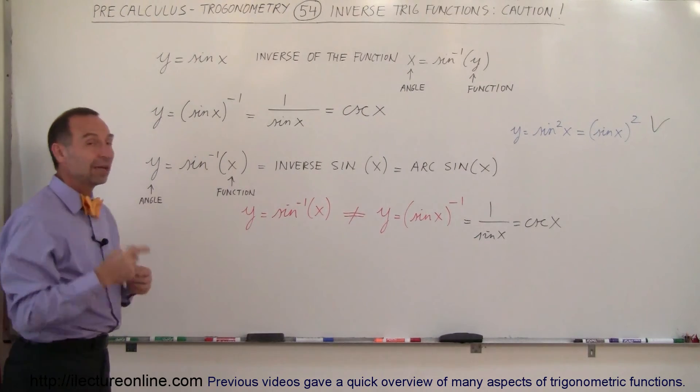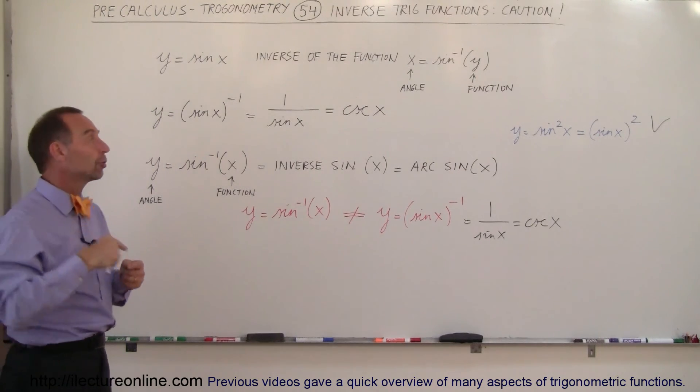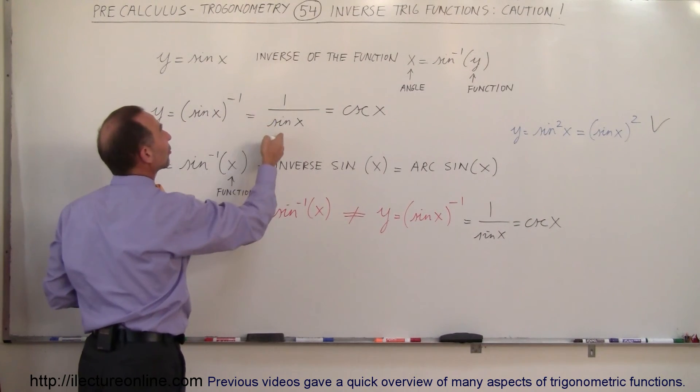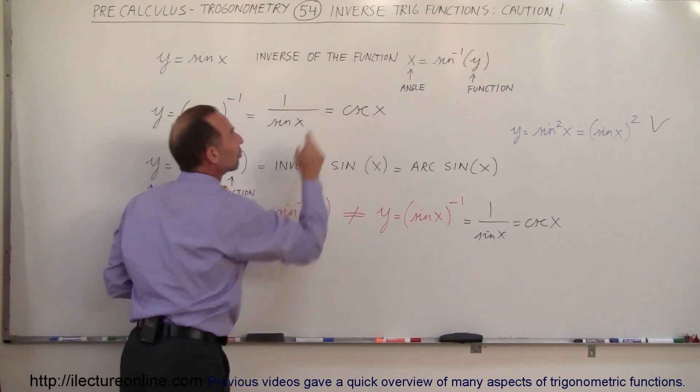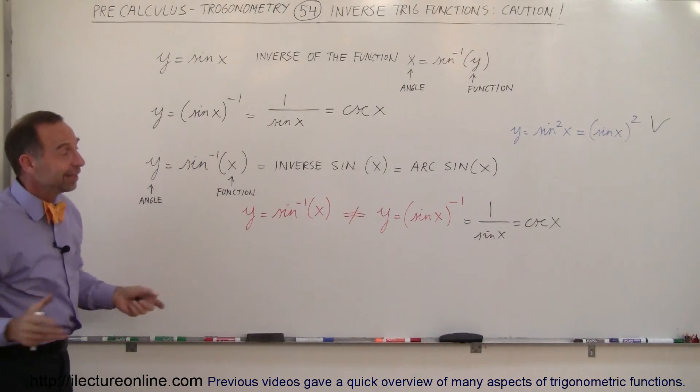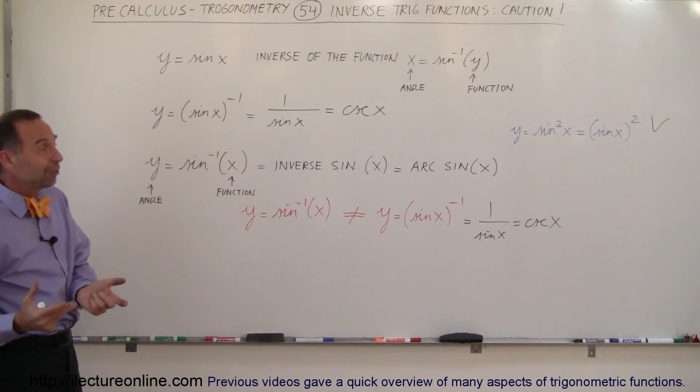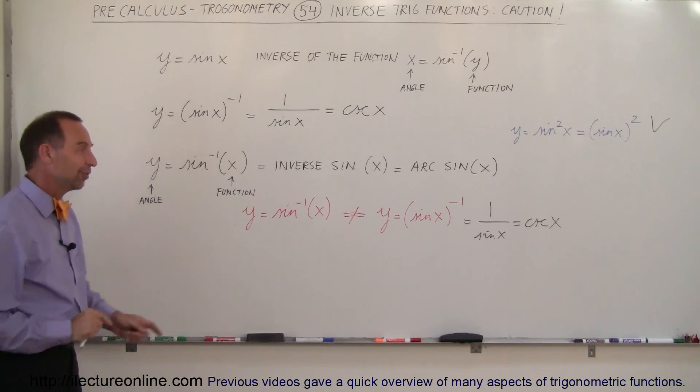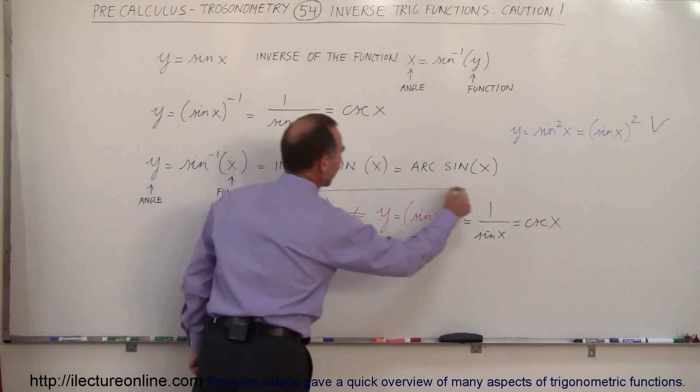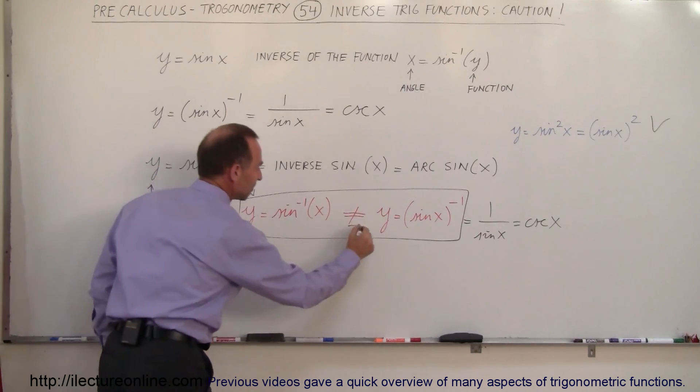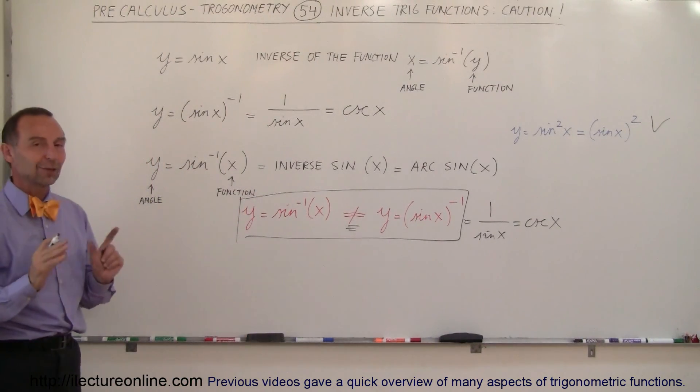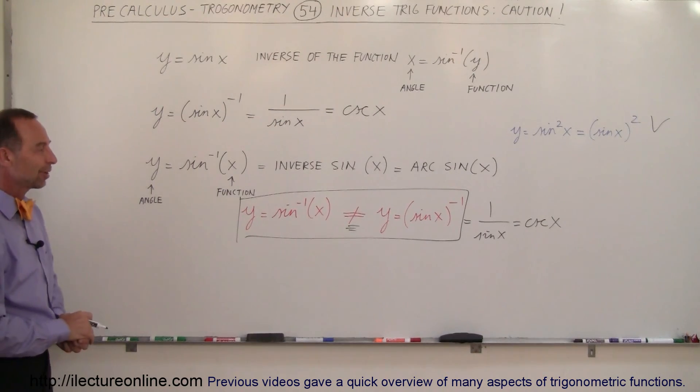That's sine to the minus 1. If I just simply say 1 over the sine of the function, that's the quantity sine of x to the minus 1, that's the inverse of that, 1 over sine of x, which is the cosecant. Hopefully that clears it up for you. So if it was confusing before, I'm hoping that this will make sense for you and you see the difference. Make sure that you keep this in mind that these are not the same. Notice not equal to. Those are not the same thing. They're totally different things in trigonometry.